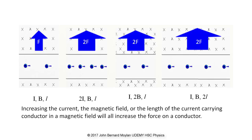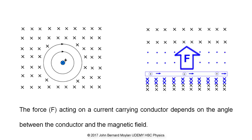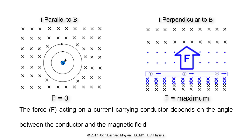The force on a current carrying conductor in a magnetic field also depends on the angle of the conductor to the external magnetic field. If the conductor is parallel to the external magnetic field, as shown in the first diagram, there is no net force on the conductor. The greatest force is produced when the conductor is oriented perpendicular to the external magnetic field, as shown in the second diagram. The magnetic field due to the charges moving through the conductor is shown in blue — underneath the conductor as blue crosses representing a field into the page, and above the conductor as blue dots indicating a field coming out of the page. In both diagrams, the external magnetic field is represented by black crosses, indicating a field oriented into the page.